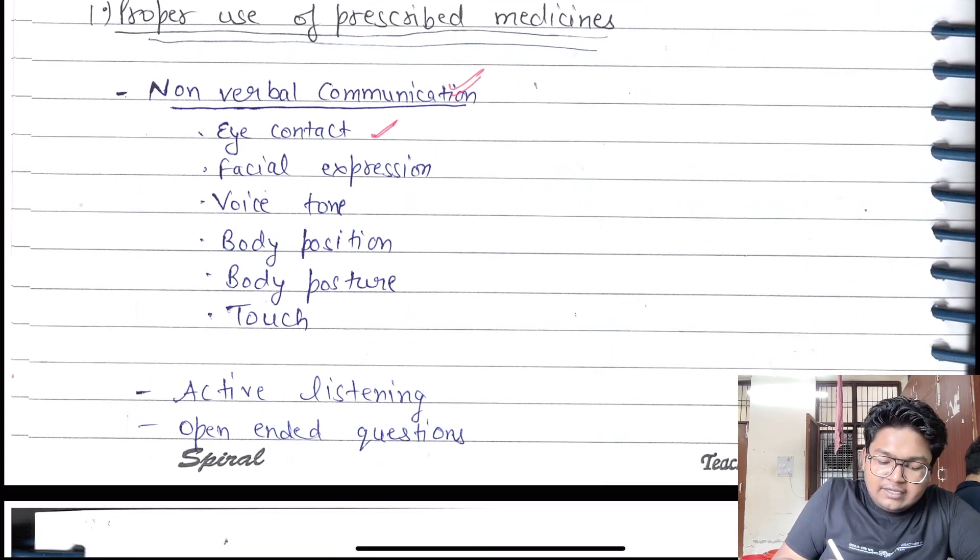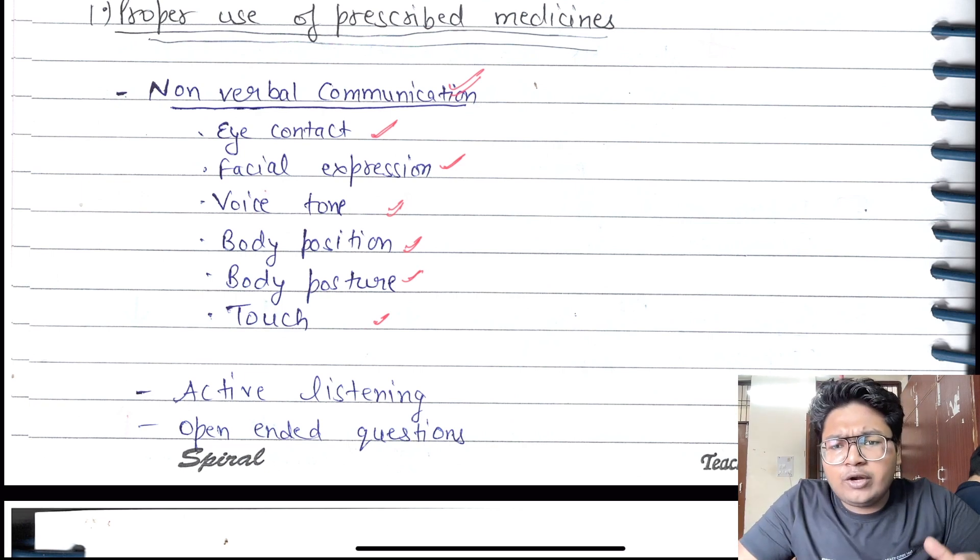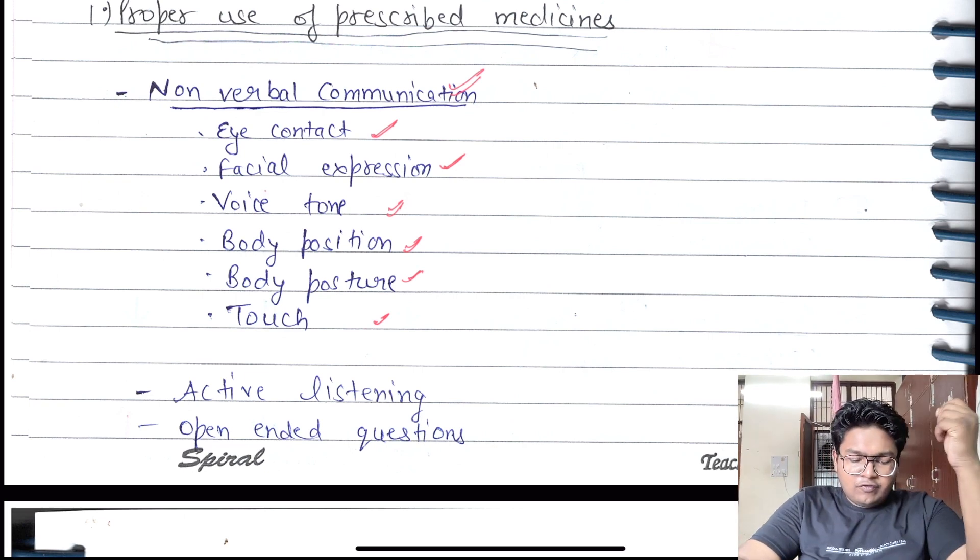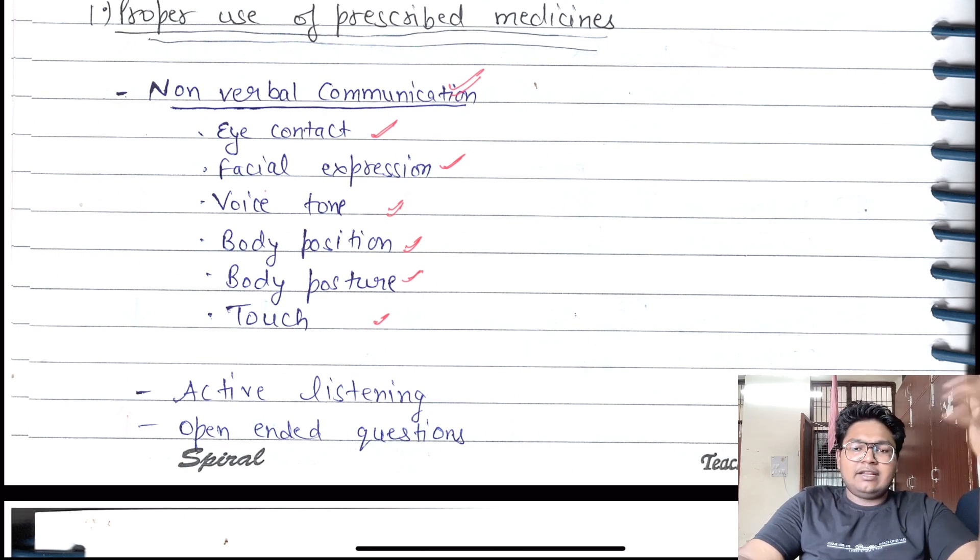Non-verbal communication with the patient includes eye contact, facial expression, voice tone, body position, body posture, and touch. How you're touching a patient - everything leads to a way of communication.